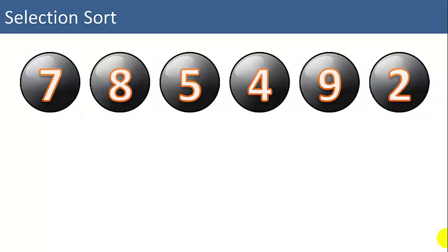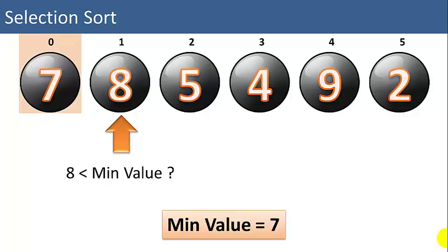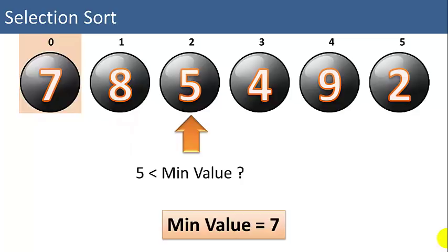So let's start with an unsorted list. We have six items, numbered 0 to 5. We'll take a look at the first item and set our min value to 7, which is the first item. So far we haven't found anything lower than 7. We compare 7 to 8 — is 8 less than our min value of 7? No. Is 5 less than min value? Yes, so we'll assign 5 to the min value.